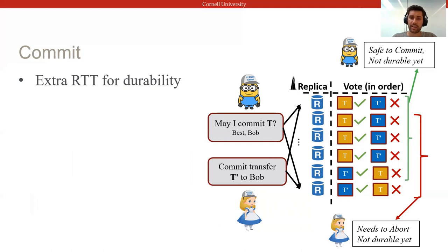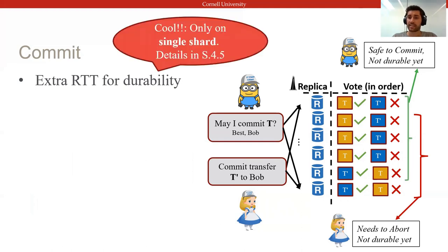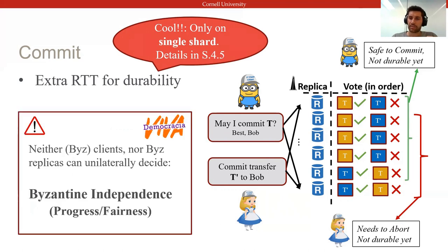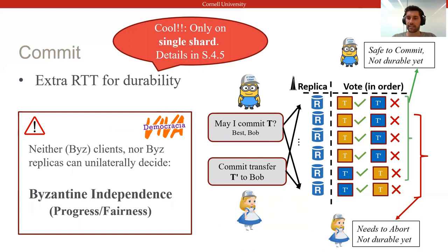I encourage you to refer to the paper for full details. What I want you to take away here is that Basel's commit protocol is designed so that neither clients nor groups of Byzantine replicas can single-handedly dictate results. Clients rely on a set of replica votes, and for each type of decision — whether commit or abort, durable or not — the set must involve at least some correct replicas.